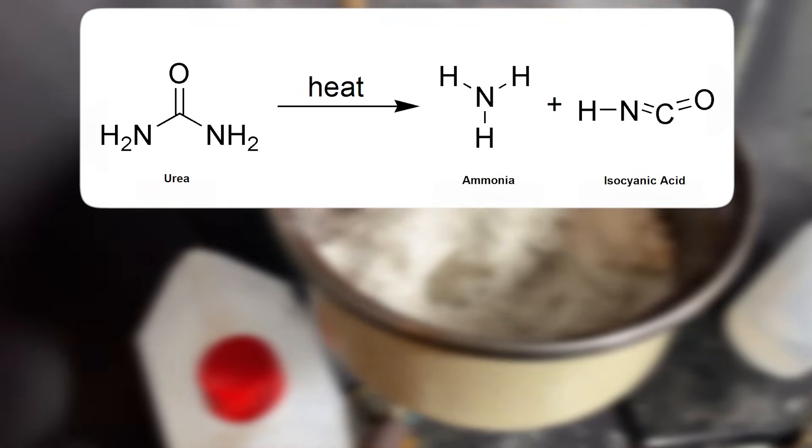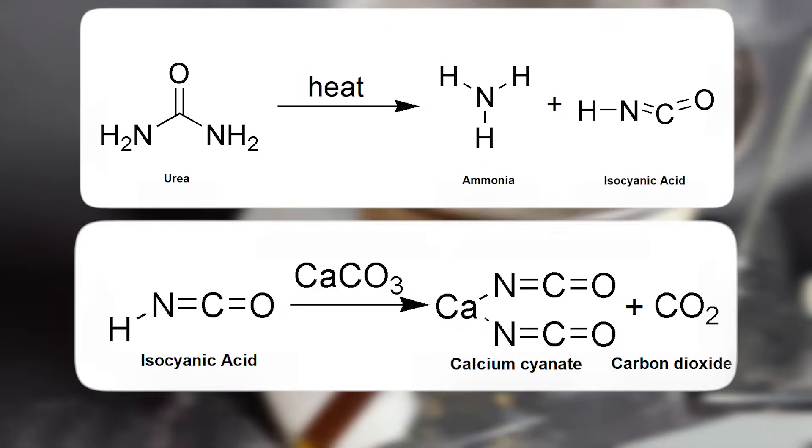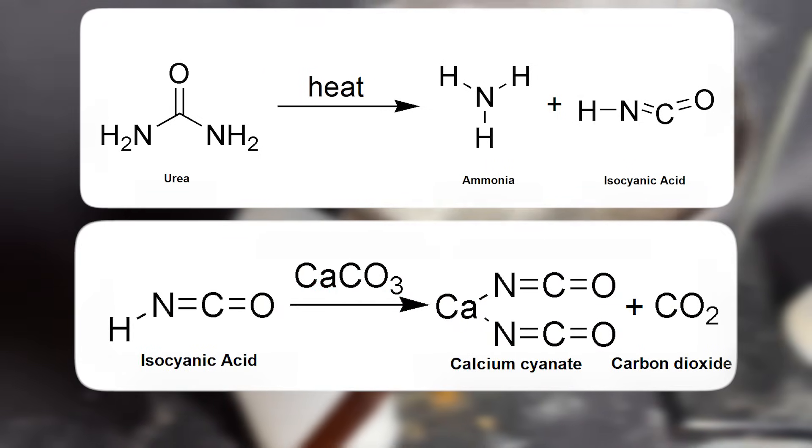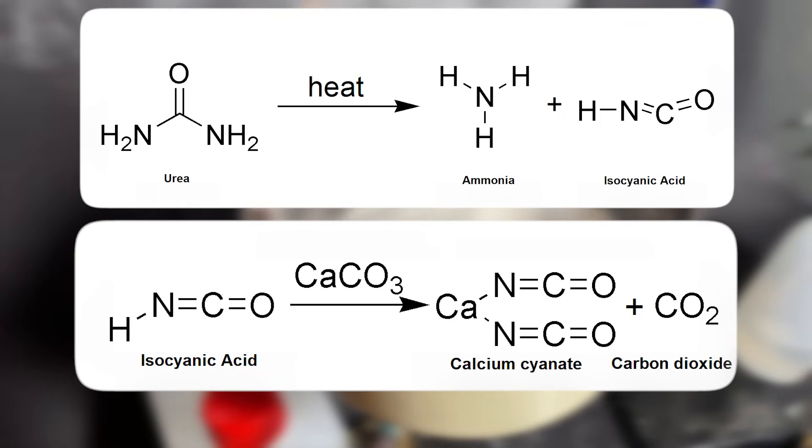Under heat, the urea decomposes into ammonia and isocyanic acid. Then, this isocyanic acid reacts with the calcium carbonate to form calcium cyanate in an acid-base reaction.